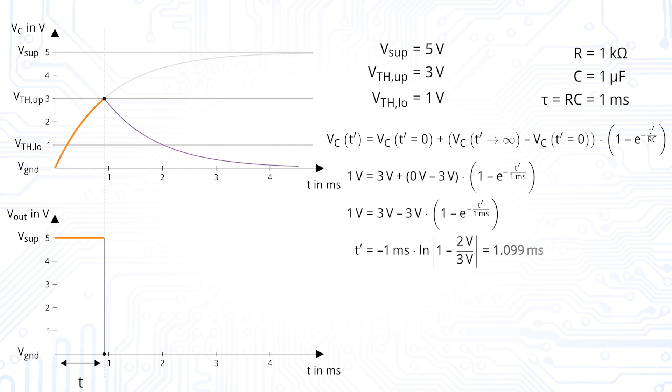We want to know the time when the voltage reaches the lower threshold voltage. We reach the lower threshold voltage after 1.099 milliseconds, which corresponds to the off time.